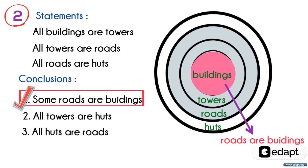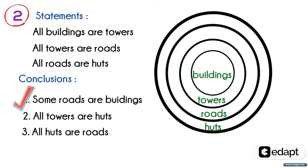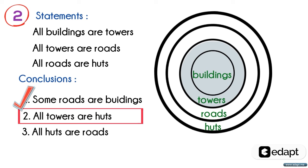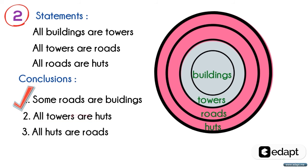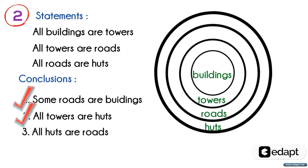For the second conclusion, all towers are huts means that the complete portion of towers are inside the huts. Here you can see that towers are completely inside the huts. Hence, conclusion two is also true. For the third conclusion,